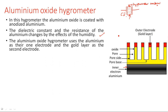The aluminum oxide hygrometer uses aluminum as one electrode and the gold layer as the second electrode. In the bottom part we have an aluminum plate acting as electrode one, and in the top layer we have a gold layer which is the outer electrode, electrode two.